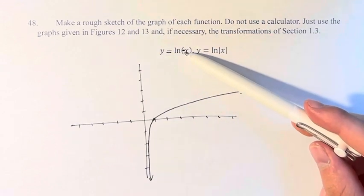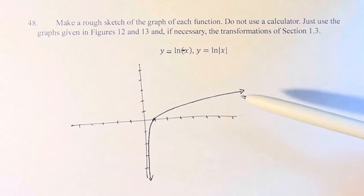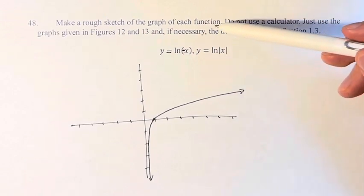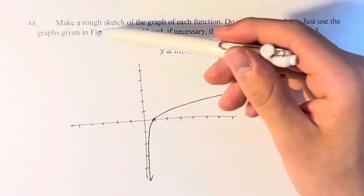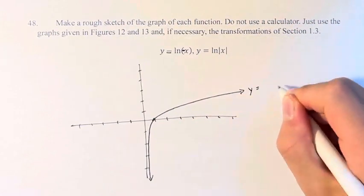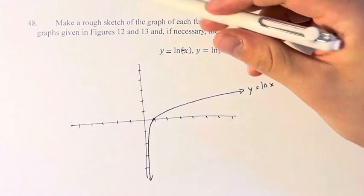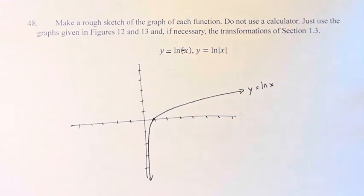We have y = ln(-x) and y = ln(|x|). We're asked to not use a calculator but to just use the graphs given in figures 12 and 13. Here we have the graph of y = ln(x) and if necessary, the transformations of section 1.3.